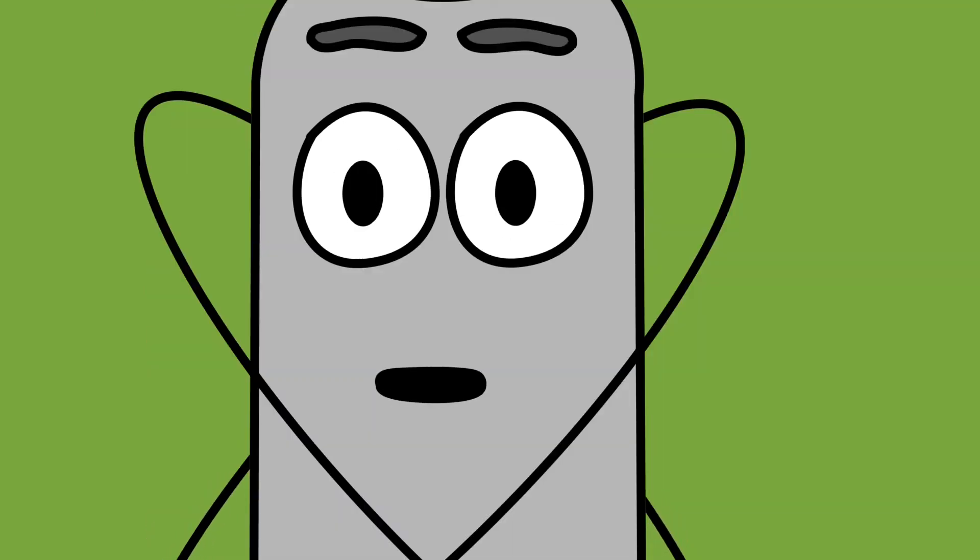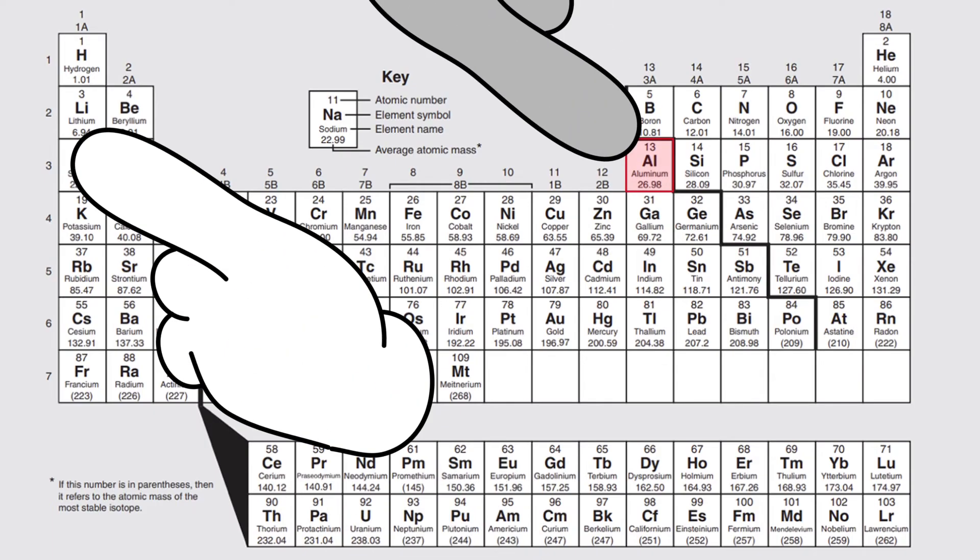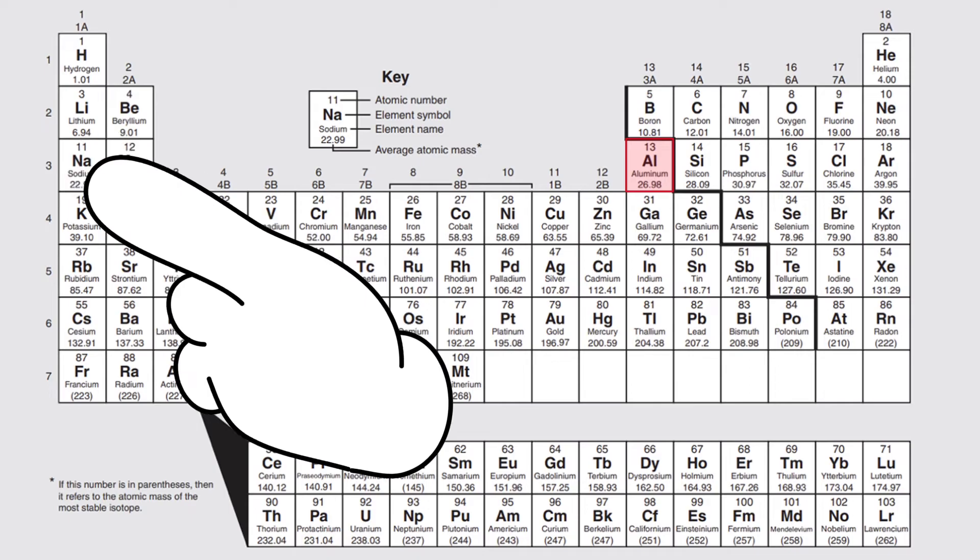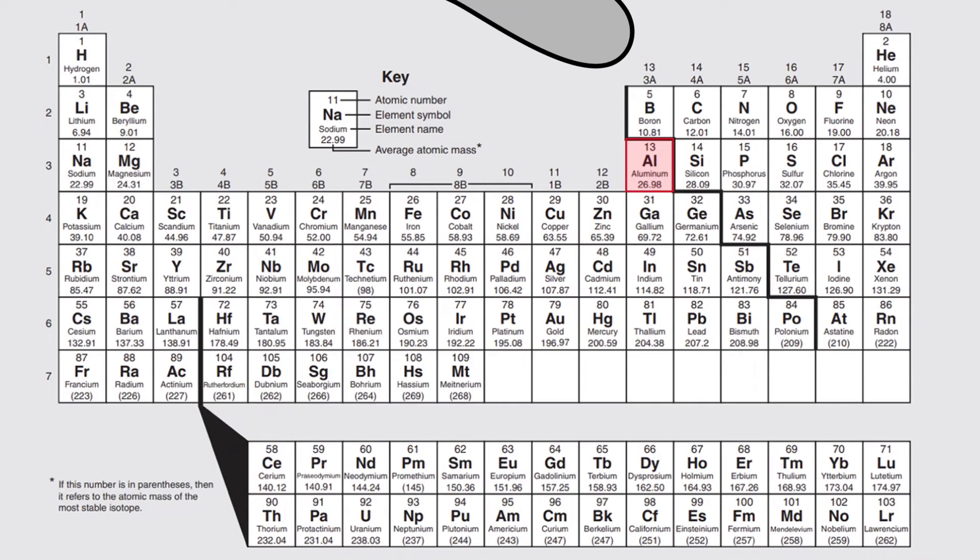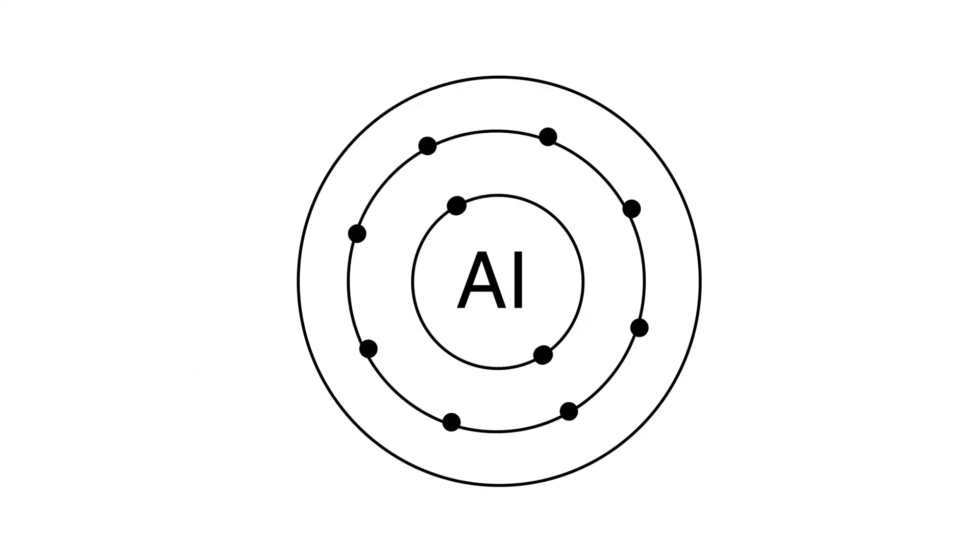So, I'm in row 3. Period 3, aluminum, yes. And column 3, I mean group 3A, so that means I have three shells total. And the third one, the outer orbital, has three electrons? That's correct.